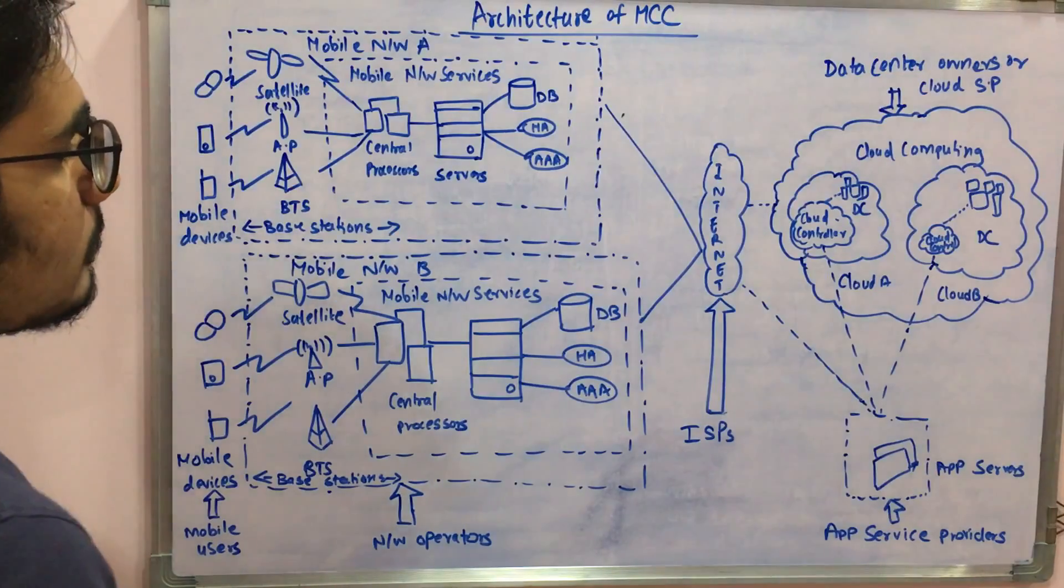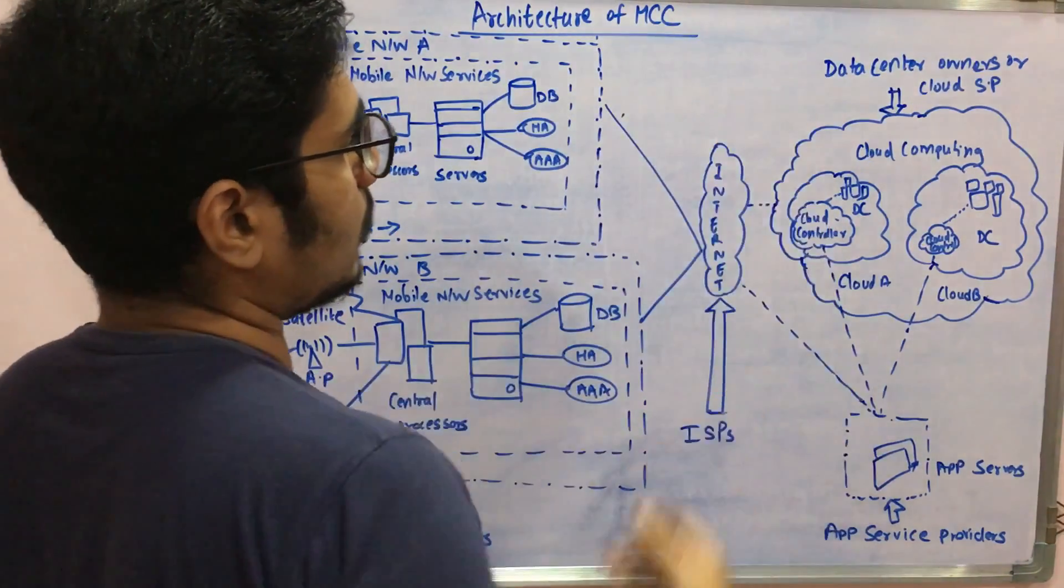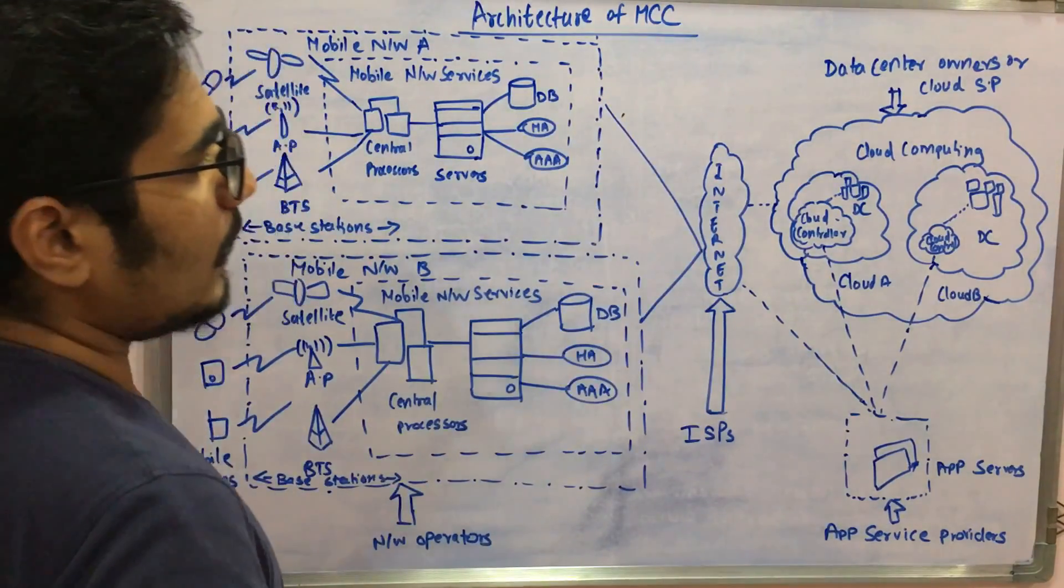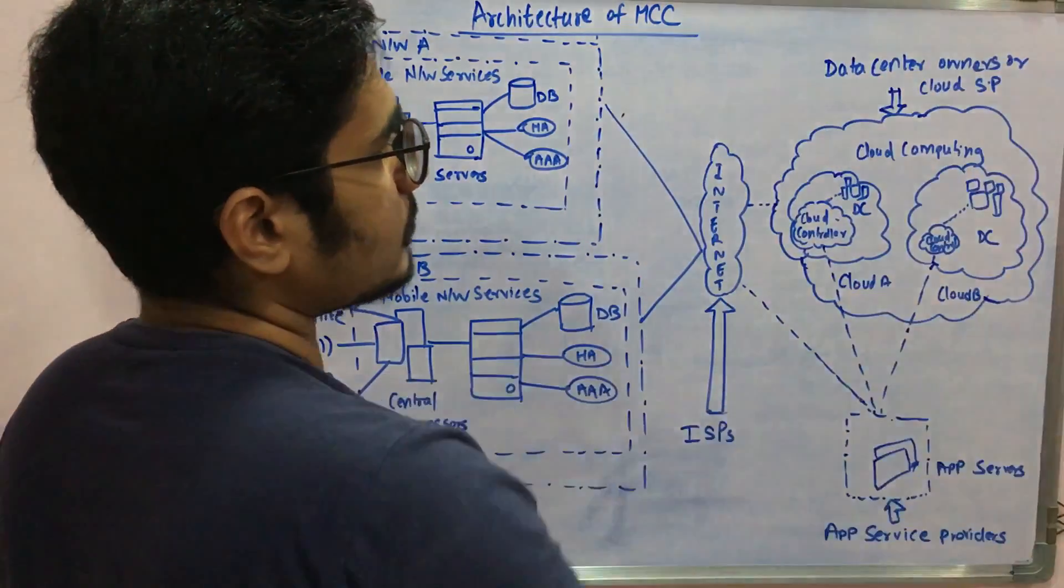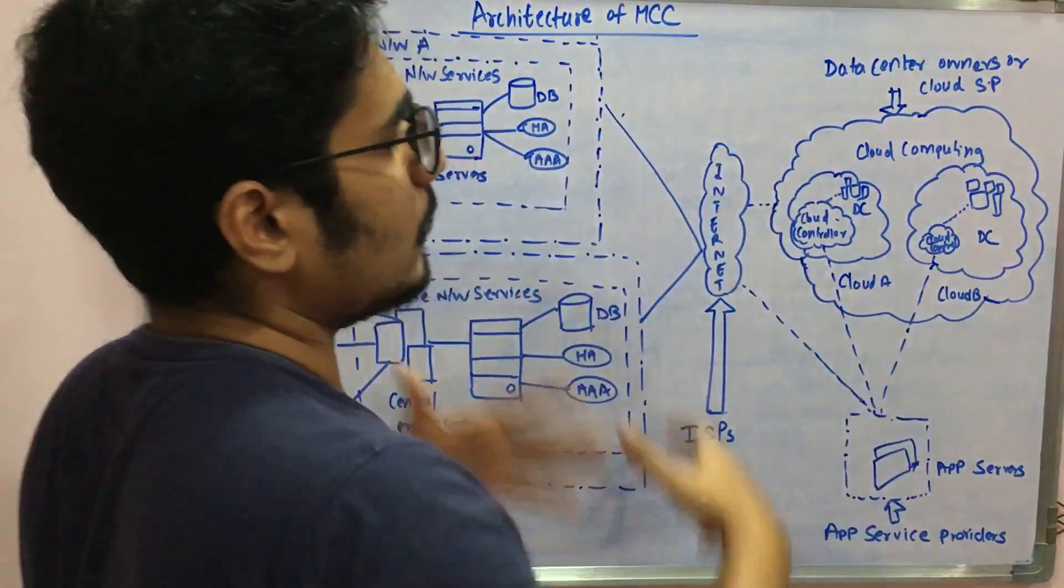Then you have the internet service provider which is the global internet from where you will access, and then you have some data center owners and the cloud service provider where all your data will be moved and all the processing takes place.